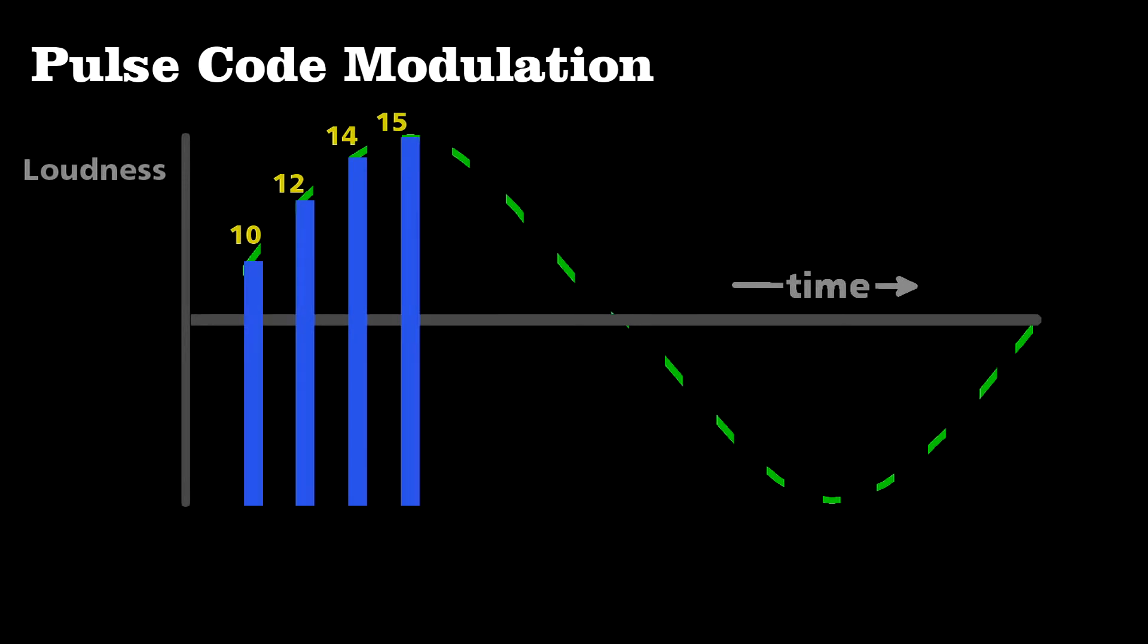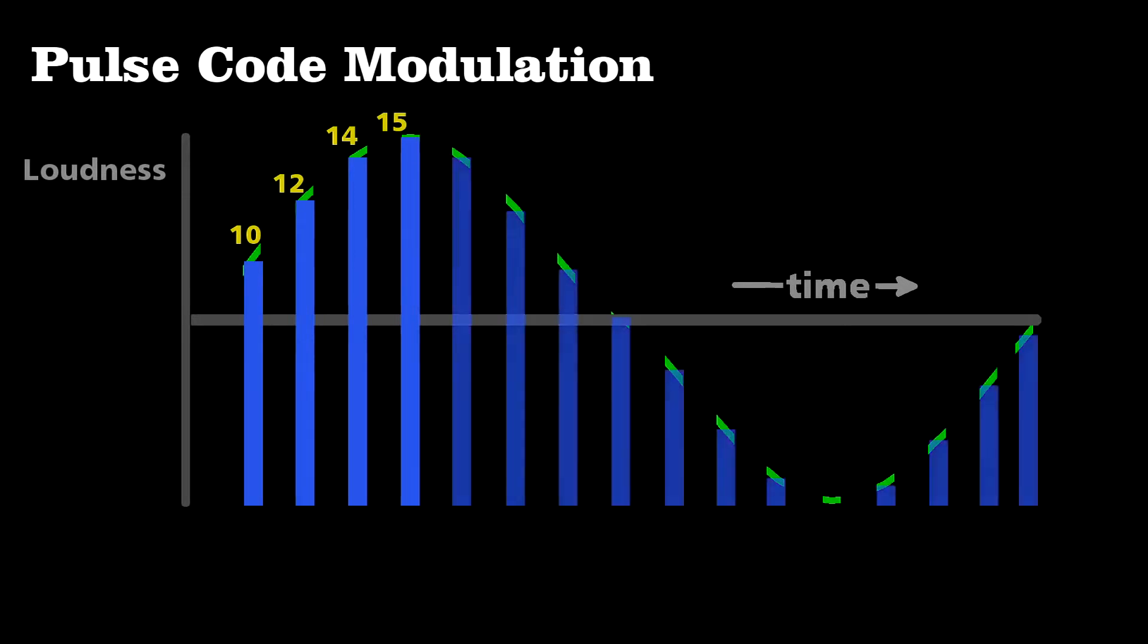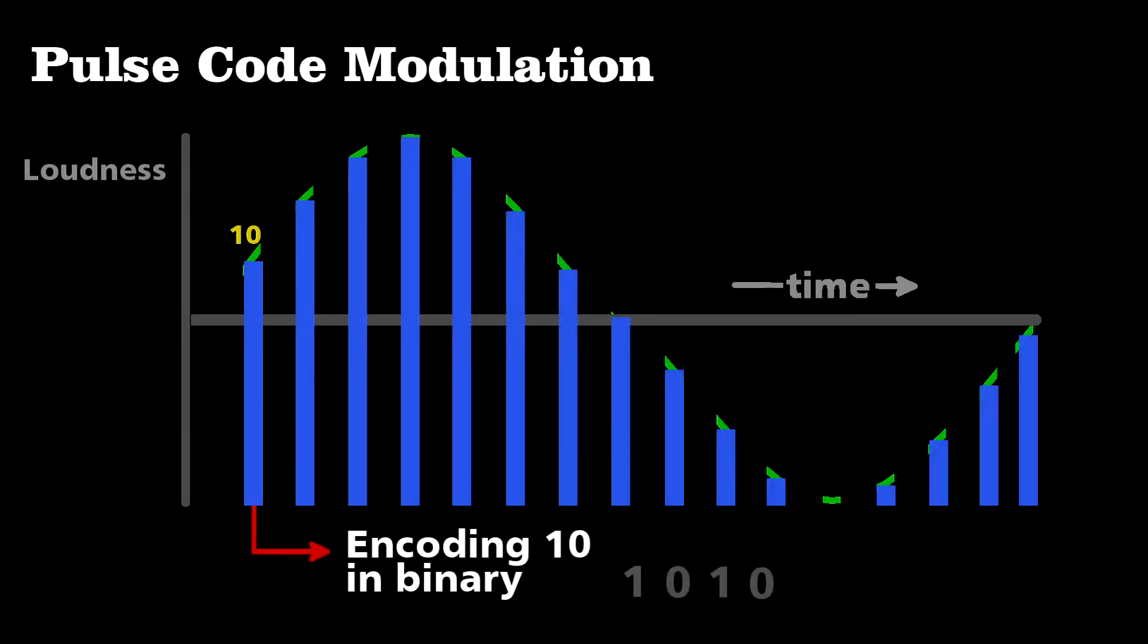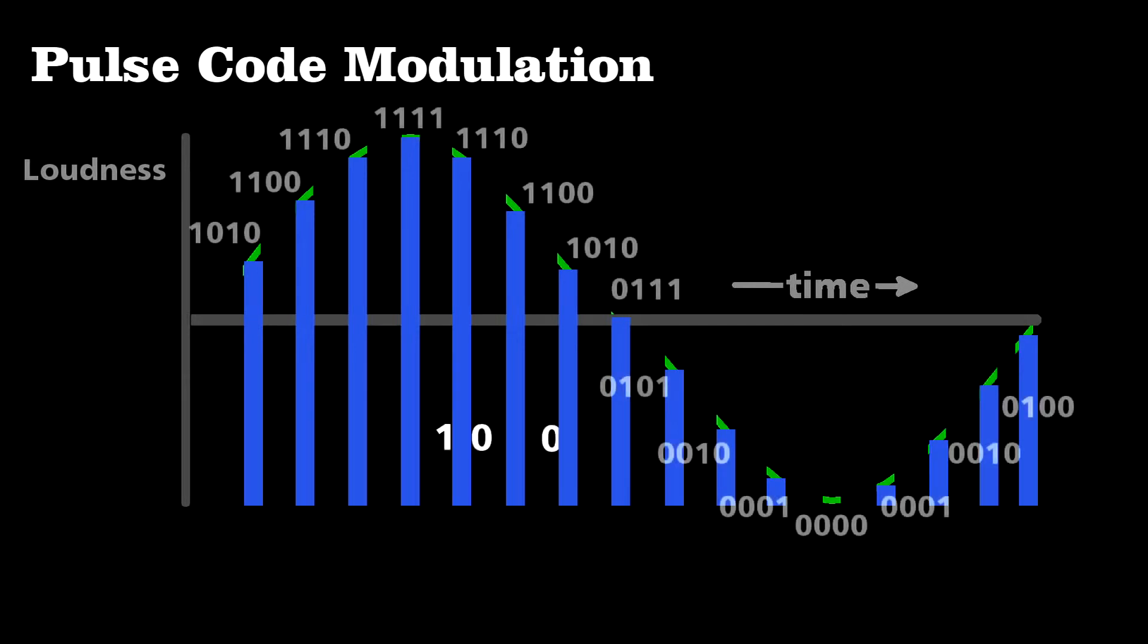We then take each section and convert its amplitude to a series of ones and zeros. The first bar of value 10, when encoded, becomes one, zero, one, zero. We can do this for each section of the curve.